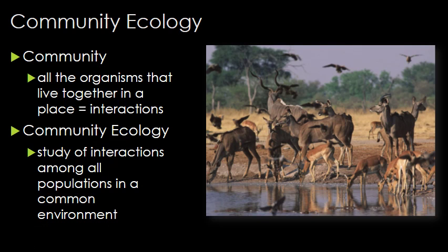In the last video we focused primarily on populations. Today we're going to be looking at communities. An ecology of communities is an assemblage of populations of different species interacting with one another. Community ecology is the branch of ecology that studies the interactions between and among species. It considers how such interactions, along with the interactions with the abiotic environment, affect community structures and species richness, diversity, and patterns of abundance. Really we're going to be looking at species interactions and all that entails.